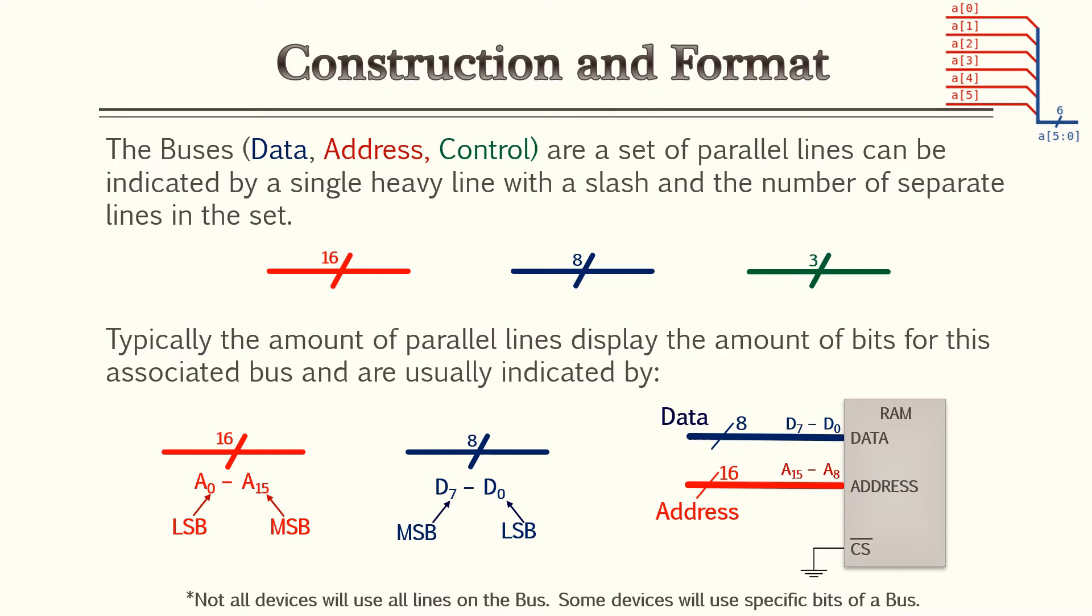Typically the amount of parallel lines displays the amount of bits for the associated bus and it's usually indicated by what you see below. So for red we have 16 slash. That means there are 16 bits. So you have an A0 through A15. A0 would be your least significant bit. A15 may be your most significant bit. You may see your most significant bit first or your least significant bit first. But be aware these are the two formats you may commonly see. And also you'll see these particular formats right next to the devices. So in the RAM we have to the right they have data of eight bits which is D7 through D0 and your address A15 through A0. Be aware not all devices will use all the lines on the bus. Some devices will use specific bits of that bus and most address registers and data bits are typically indicating hexadecimal format.